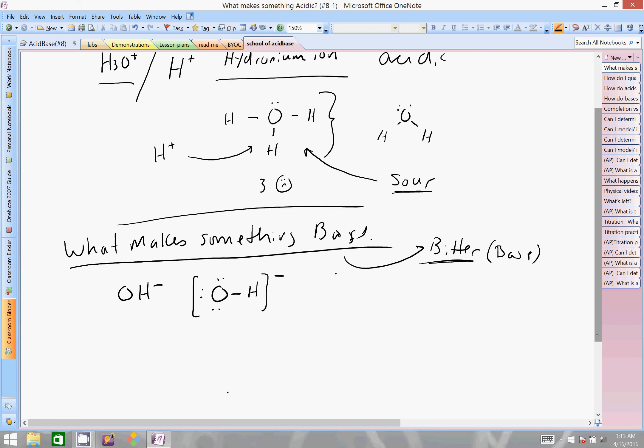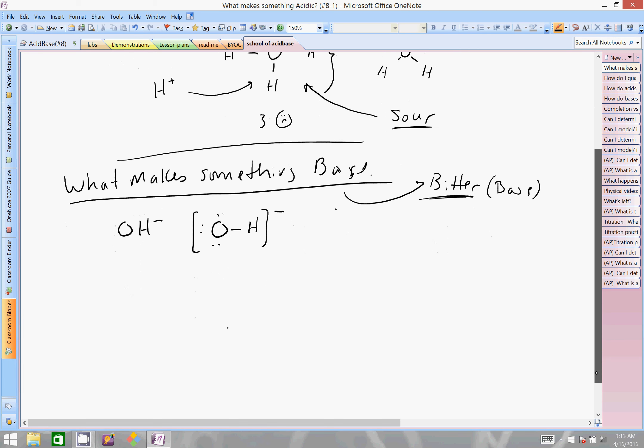So again, it looks awfully similar to that of a water molecule. So a water molecule, H2O, has a unique ability to do two things. It can gain an H+ to proceed to a chemical called hydronium. Or it can lose an H+ to form a chemical called hydroxide.